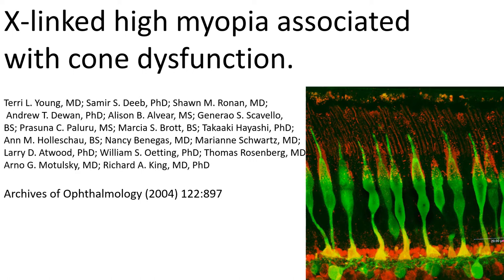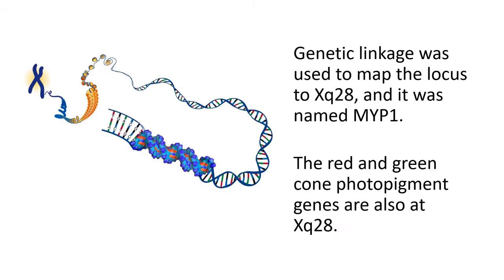We got interested in this when Terry Young and colleagues published this paper in 2004 describing X-linked high myopia associated with cone dysfunction. This is a very severe inherited form of myopia in which affected individuals often have refractive errors more than minus 12 diopters and they frequently go blind from complications caused by their excessively long eyes. Genetic linkage was used to map the locus for Terry Young's patients to Xq28 and the locus was officially named MYP1 for the first myopia gene.